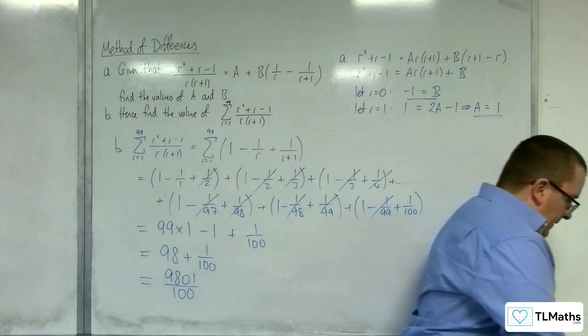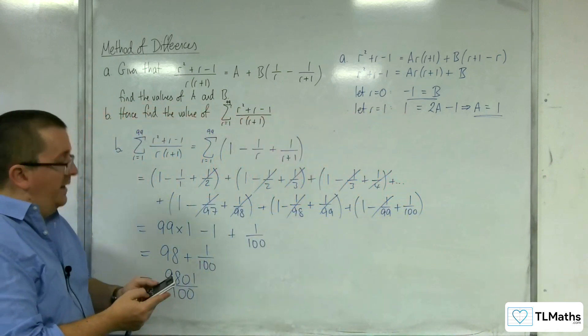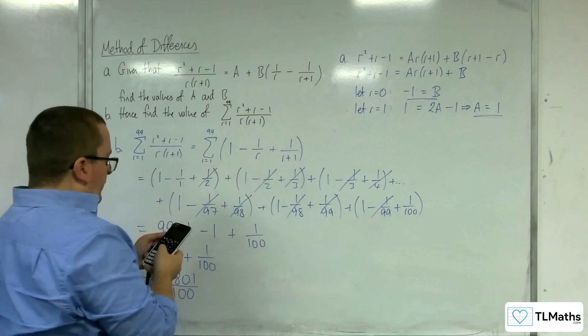So 9,801 over 100. Now, we can check that. So on my calculator using the summation button, I'll type this in.